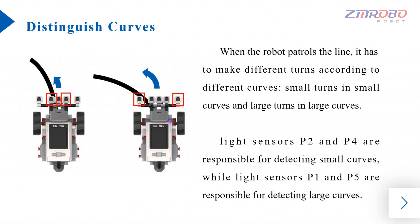For example, the robot makes small turns when it encounters small curves and large turns when it encounters large curves.